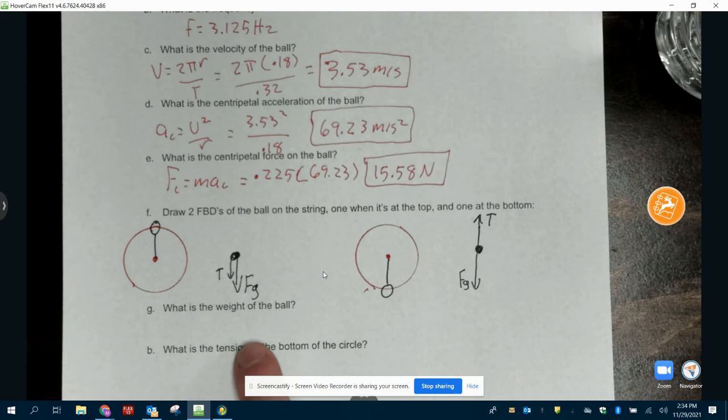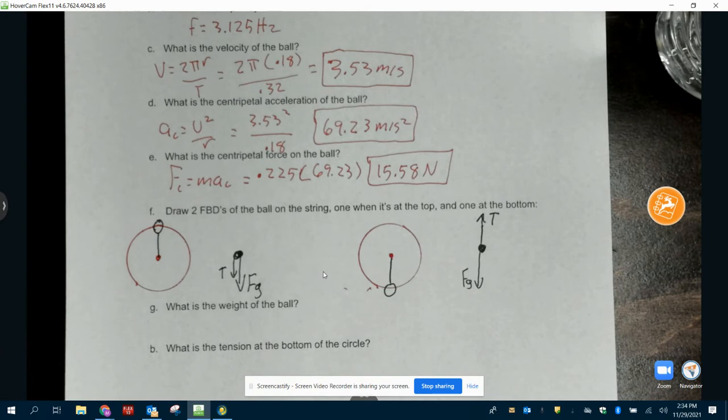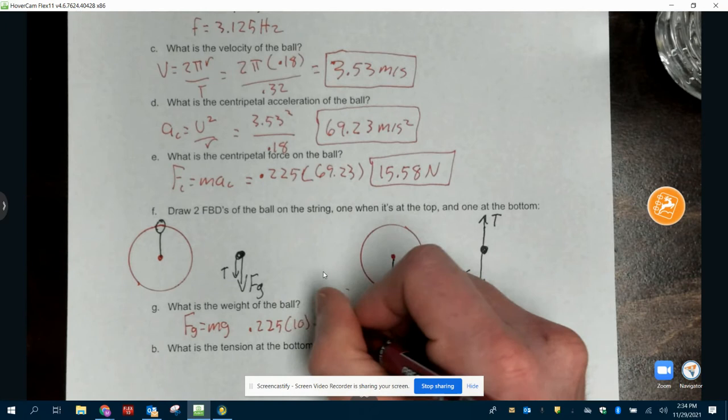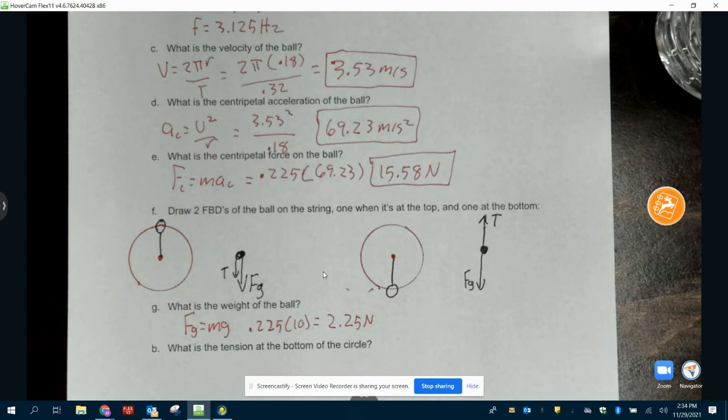What is the weight of the ball? How do we get weight on Earth? Mass times gravity. All we've got to do is Fg equals mg. So we plug in our mass, 0.225 times 10, gets us 2.25 newtons.